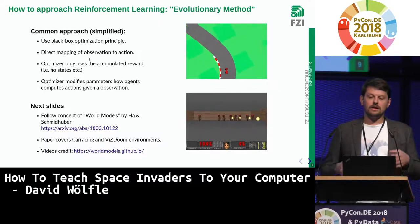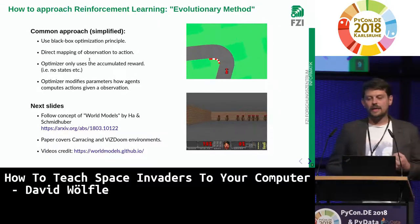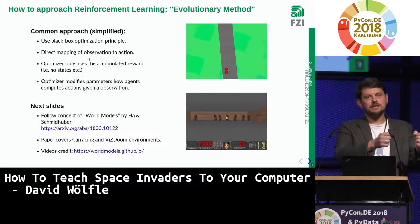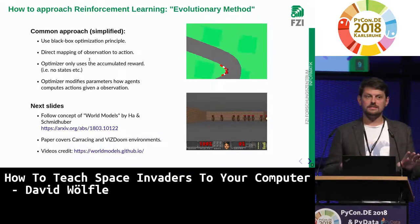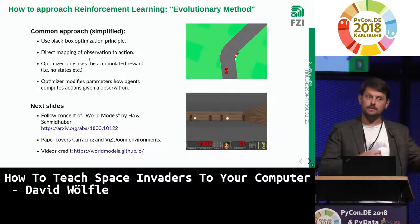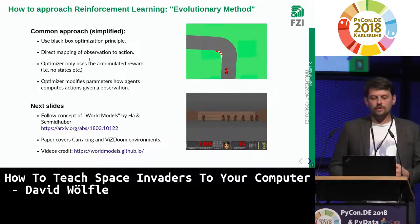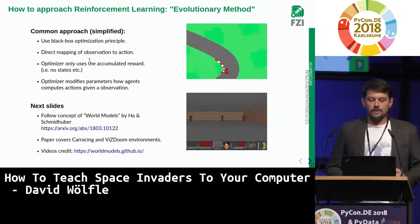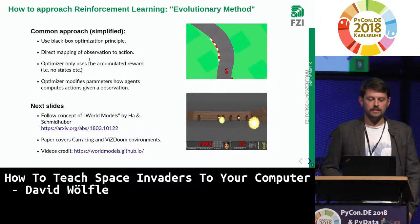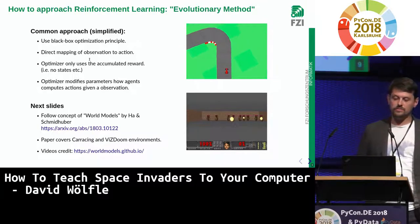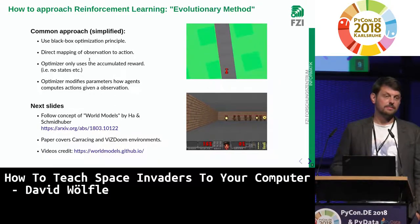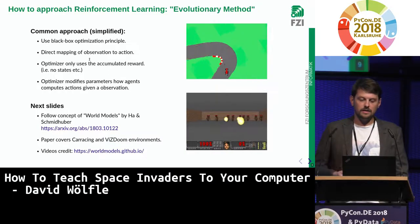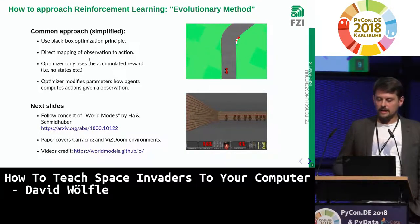So instead, we can use an evolutionary method — black box optimization — which finds a direct mapping from observations to actions. The optimizer receives parameters and in the end gets a reward signal; it doesn't see the close step-by-step game interaction. I follow the concept of a paper called 'World Models' by David Ha and Jürgen Schmidhuber, which I recommend to anyone interested in reinforcement learning. The videos shown are courtesy of that paper.